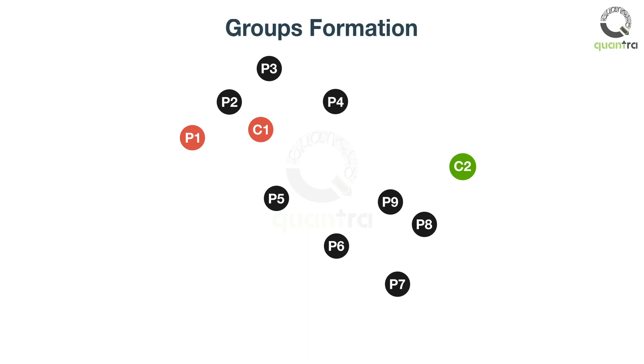Similarly, we can see that p9 is closer to c2. Therefore, it will belong to the c2 cluster or the green cluster. We can mark it as green. This process is repeated for all the points, and based on the proximity to centroids, these points will belong to either the red group or the green group.